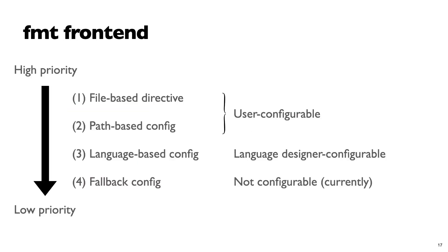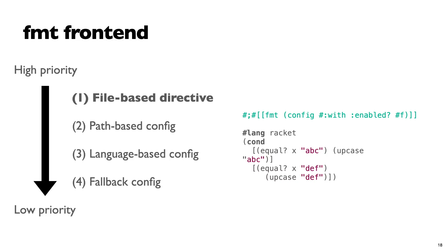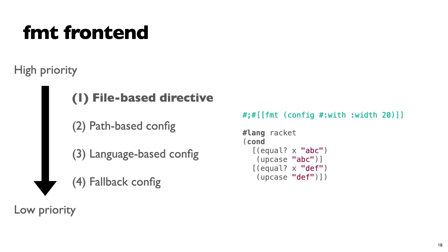How does the front-end work? The front-end reads foldable configurations with different priorities. There's a file-based directive that you can use to configure FMT. Racket doesn't really have a directive notation, so I invented one — it looks like a special comment. This is really nice for allowing you to communicate with external tools. For example, I can set a parameter to false to say please do not format this file — maybe the file has something very sensitive to whitespace. You could also change parameters like width limit — for example, set it to 20 to prevent lines from going too far.